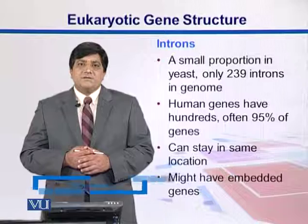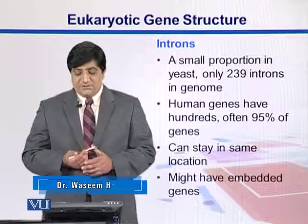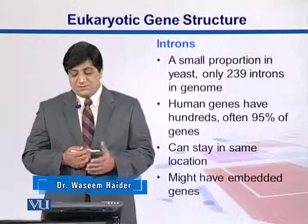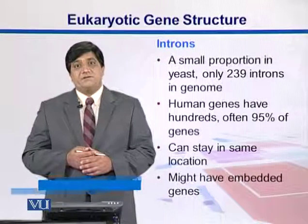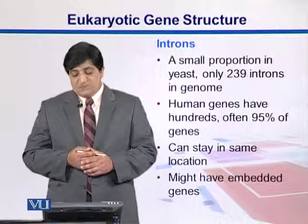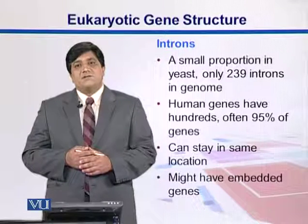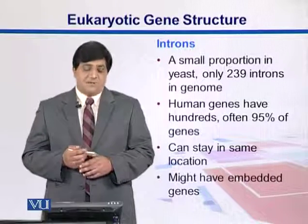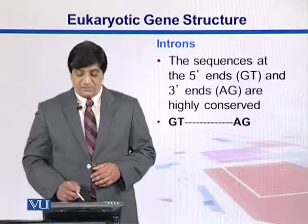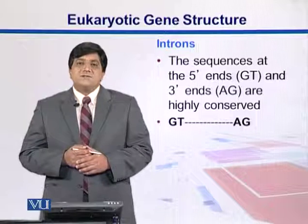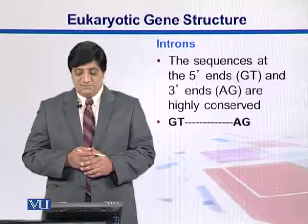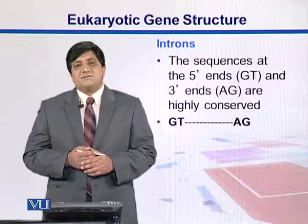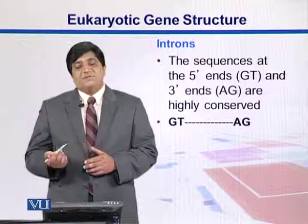Introns contribute very little in yeast — there are only 239 introns in the yeast genome — whereas in humans, introns may make up to 95% of the genome. Introns can stay in the same location, and sometimes they also have some embedded genes within them. Introns can be distinguished by the presence of GT at their 5 prime end and AG at their 3 prime end.